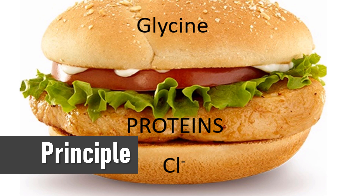The proteins move in this sandwich manner until they hit the running gel. In the running gel the pH is 8.8, and at this pH the glycine molecules are mostly negatively charged and start migrating faster than the proteins towards the positive electrode. The glycine molecules move away and the proteins are deposited in a very narrow band at the interface between the stacking gel and the running gel. Since the running gel has increased acrylamide concentration, it slows the movement of the proteins and the proteins begin separating based on their size.